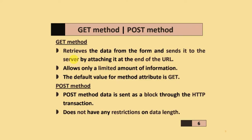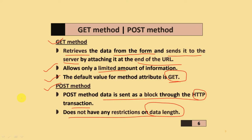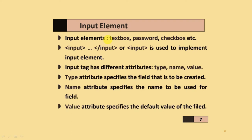The method attribute takes two values: GET and POST. The GET method retrieves the data from the form and sends it to the server by attaching it at the end of the URL (Uniform Resource Locator). It allows only a limited amount of information, and it is the default value for the method attribute. The POST method sends data through HTTP transactions and does not have any restrictions on data length.